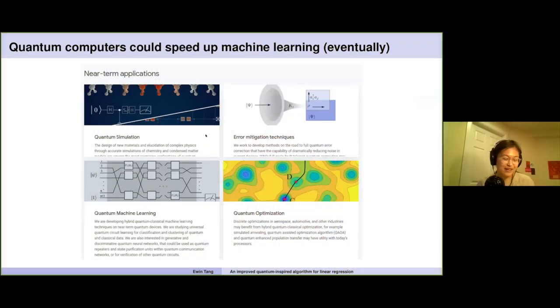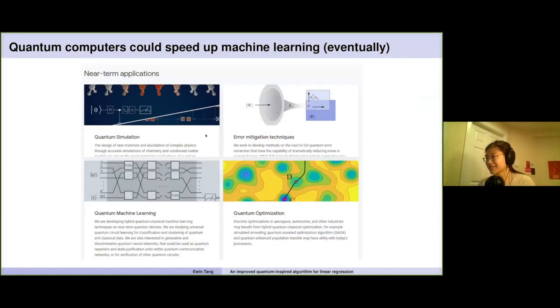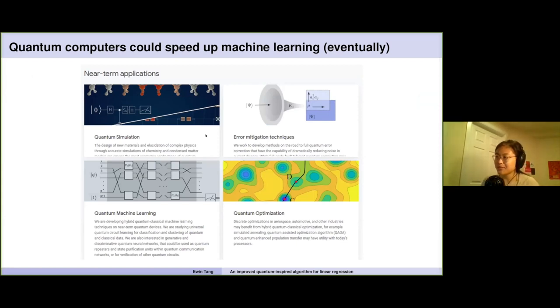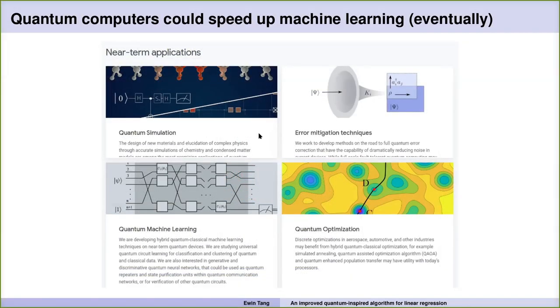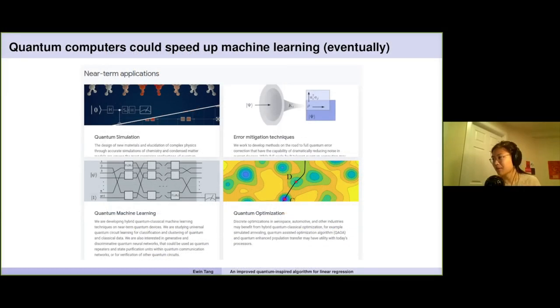I'm going to be talking about this paper in the field of quantum machine learning. This is Google Quantum's website and it gives a list of their potential applications for investigating or building quantum computers — and you can see one of these is quantum machine learning right here. Basically, if quantum computers could speed up machine learning tasks, it would lead to a lot of faster algorithms and better machine learning in the long run. If you look at algorithms being proposed for linear algebra tasks, they are actually pretty promising.